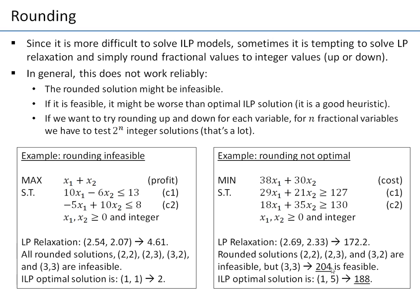So (3, 3) gives us a cost of 204. However, the optimal integer solution is (1, 5) with a value of 188. You can check that plugging in (1, 5) is feasible and gives a lower cost — it is actually the optimal cost. So you can see the rounded solution can be worse than the optimal integer solution.